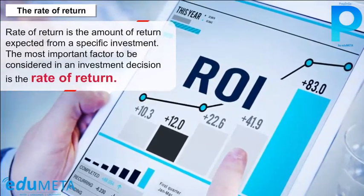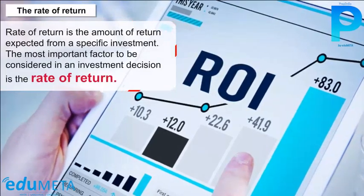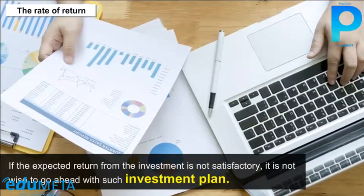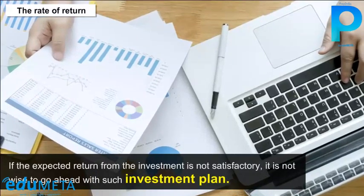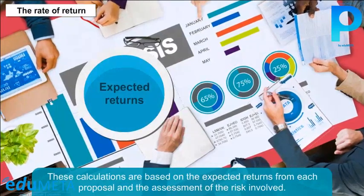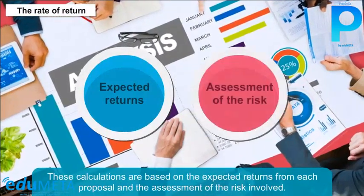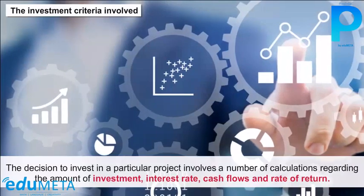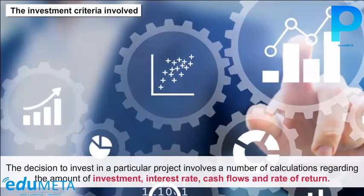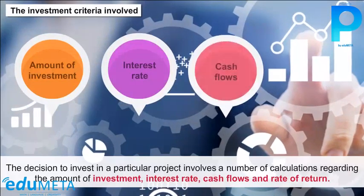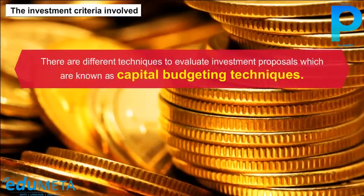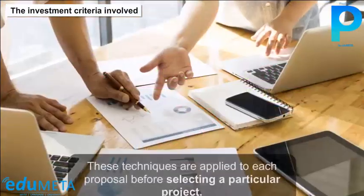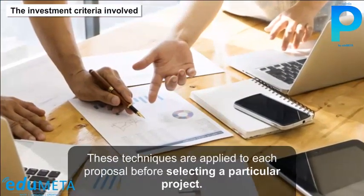Rate of Return: The most important factor to be considered in an investment decision is the rate of return. If the expected return from the investment is not satisfactory, it is not wise to proceed with that investment plan. The investment criteria involved include calculations regarding the amount of investment, interest rate, cash flows, and rate of return. Different capital budgeting techniques are applied to evaluate investment proposals before selecting a particular project.